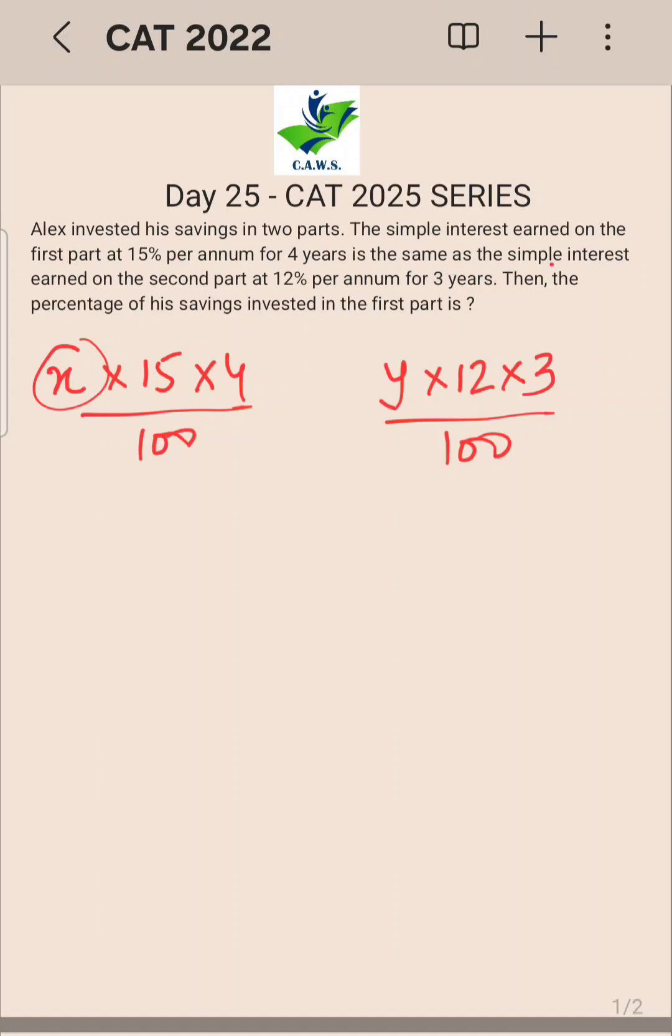So both are equal, so I can just reduce this. Can I say 60x is nothing but 36y? Both are divisible by 12, so 5x is equal to 3y.